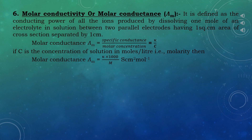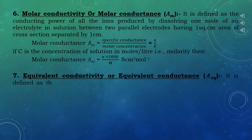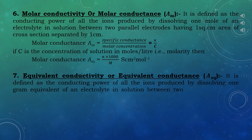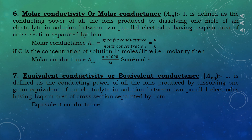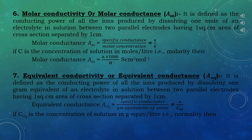The last term is equivalent conductivity or equivalent conductance, λEq. It is defined as the conducting power of all the ions produced by dissolving one gram equivalent of an electrolyte in solution between two parallel electrodes having 1 cm² area of cross-section separated by 1 cm. So λEq equals specific conductance divided by gram equivalence of solute, that is κ/CEq. If CEq is the concentration in gram equivalents per liter (normality), then λEq equals κ × 1000 / normality. Its units are Siemens·cm² per gram equivalent.